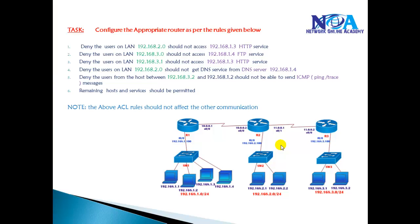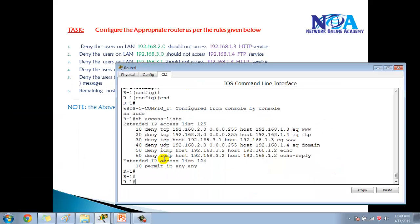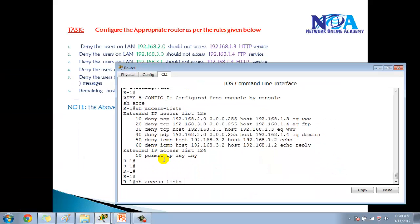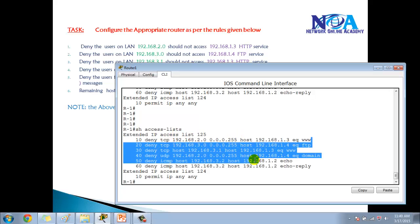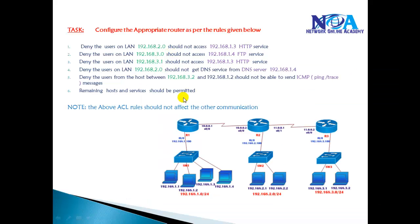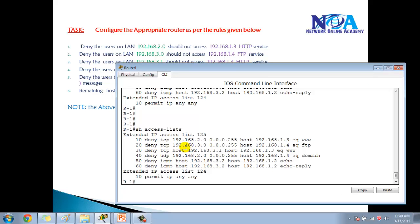In this section we'll continue with the extended ACL lab which we did in the previous scenario. Let's verify what we did — if you show access list, I have configured ACL 125 where we are going to deny specific services as per our requirement. We did not implement it yet. In this section we'll try to implement it on the interfaces and then verify the same.